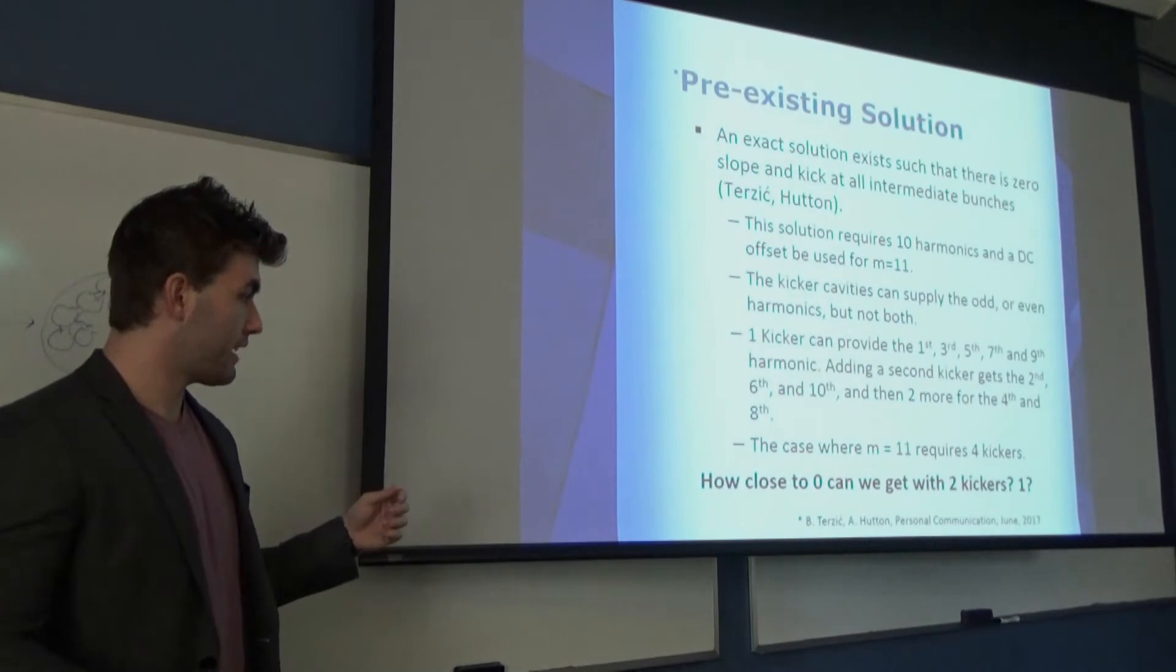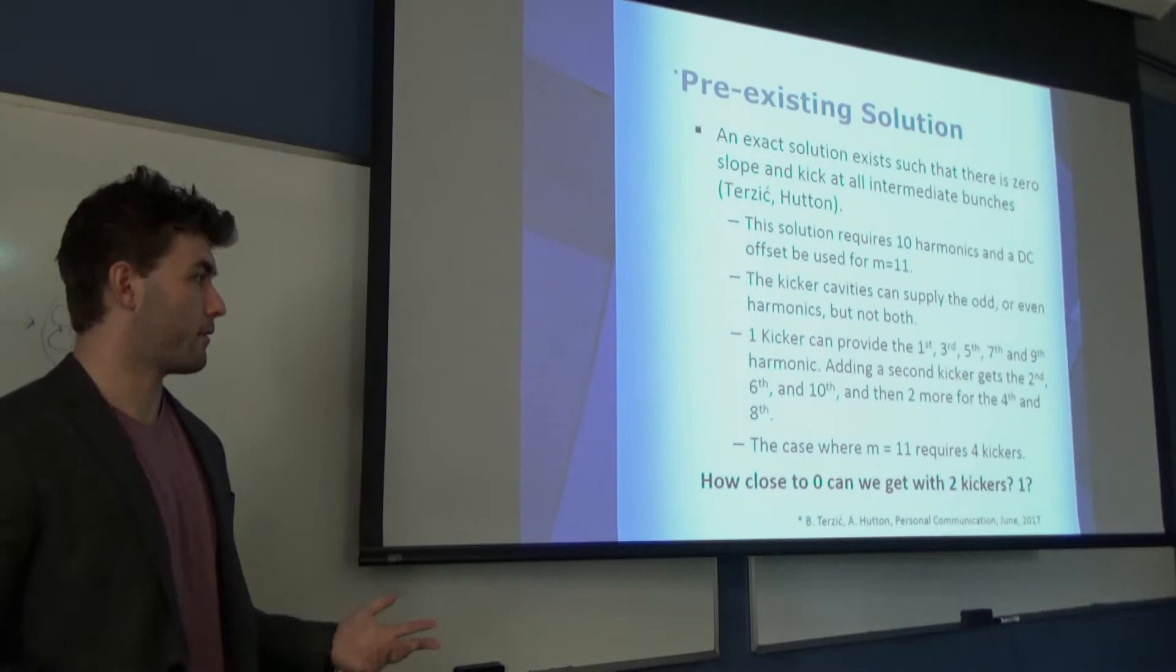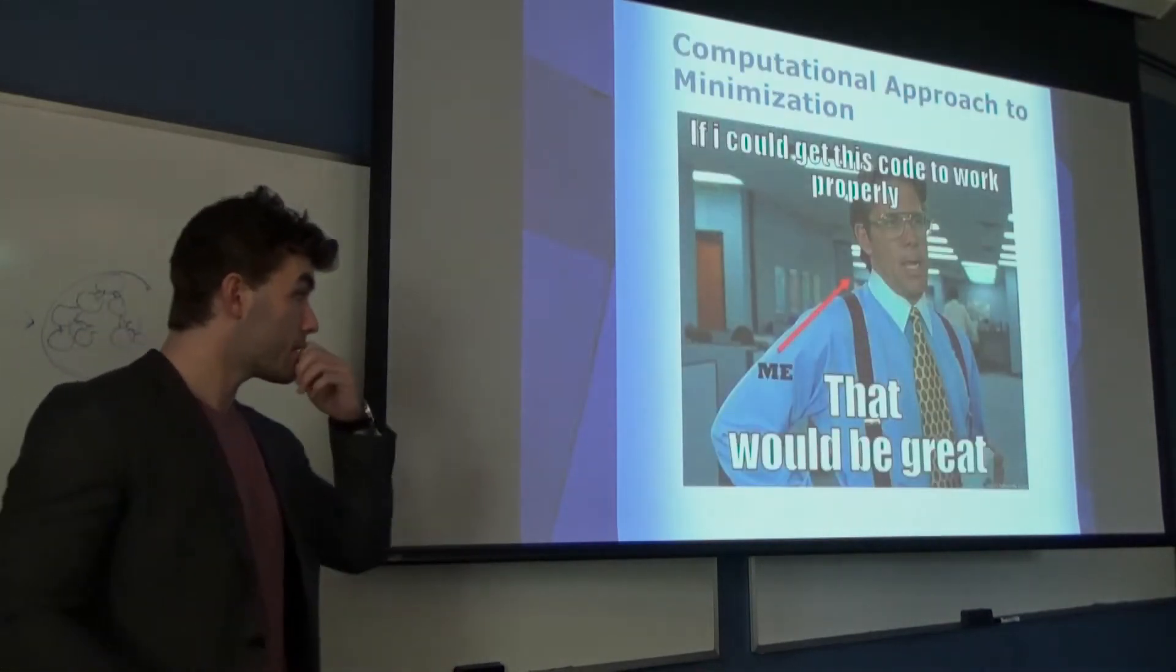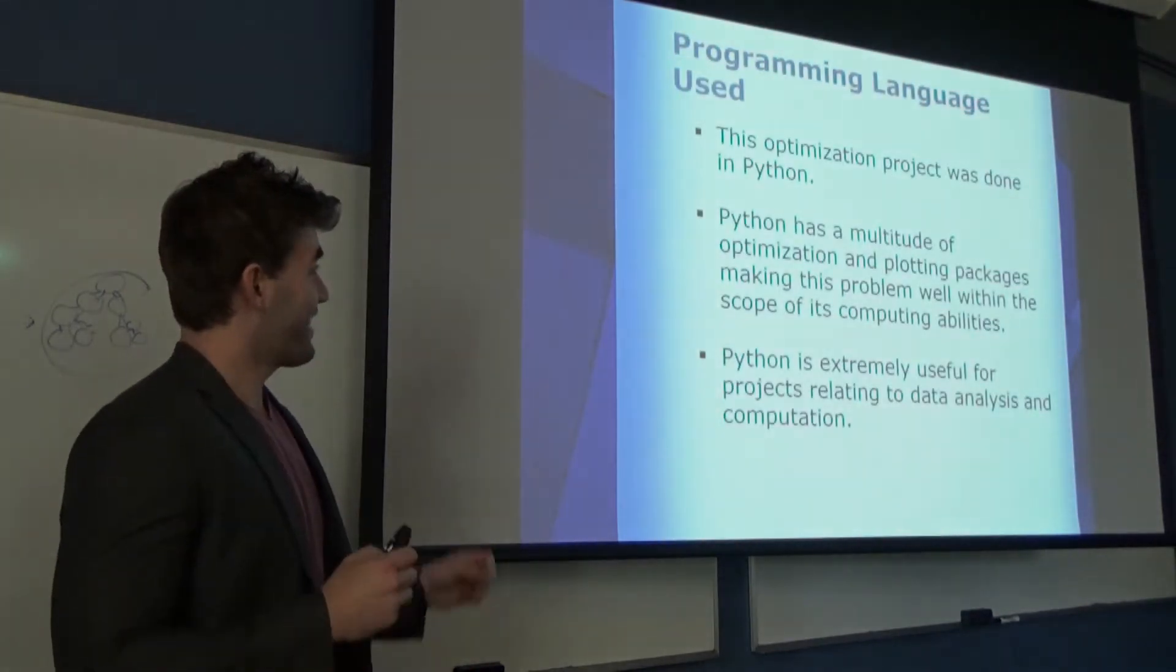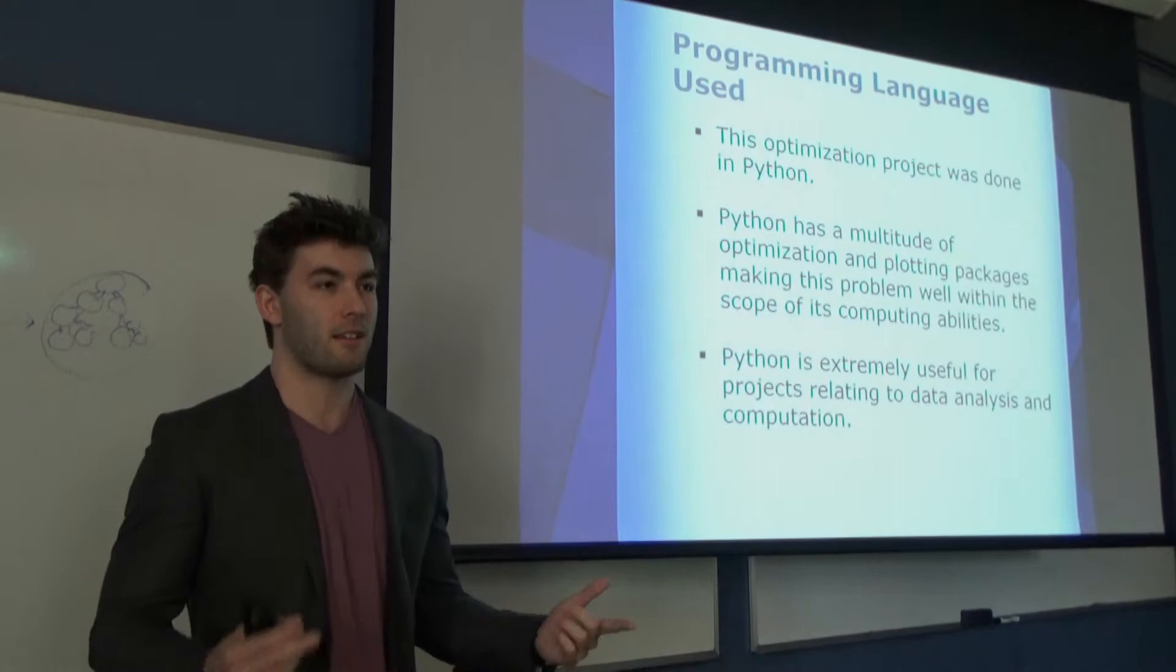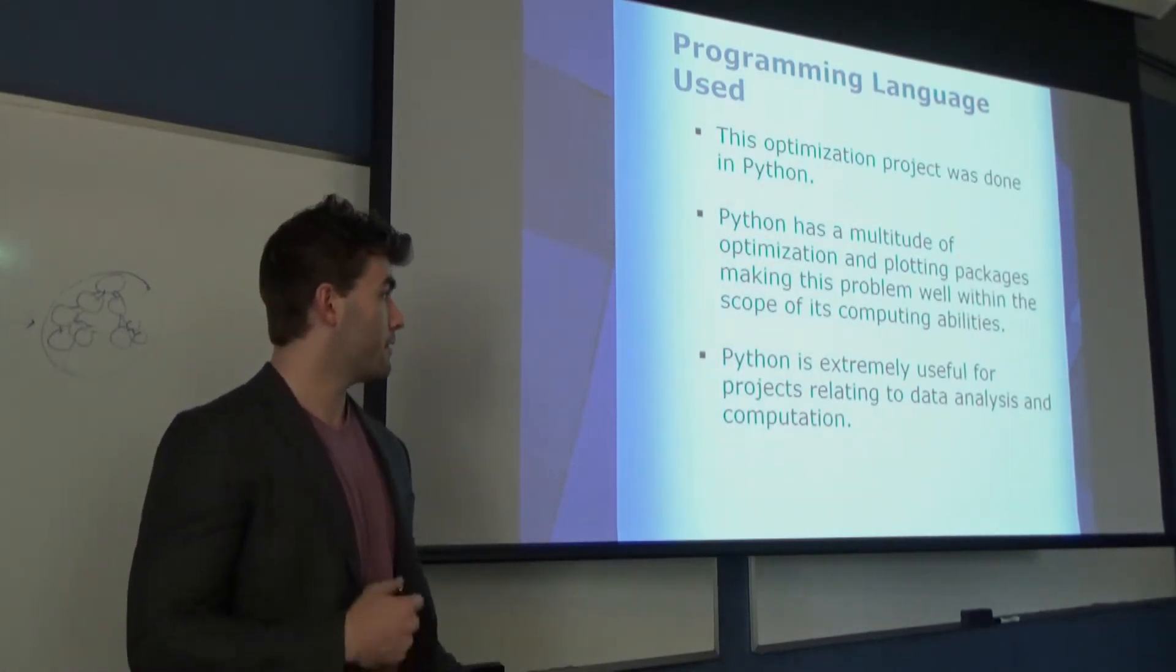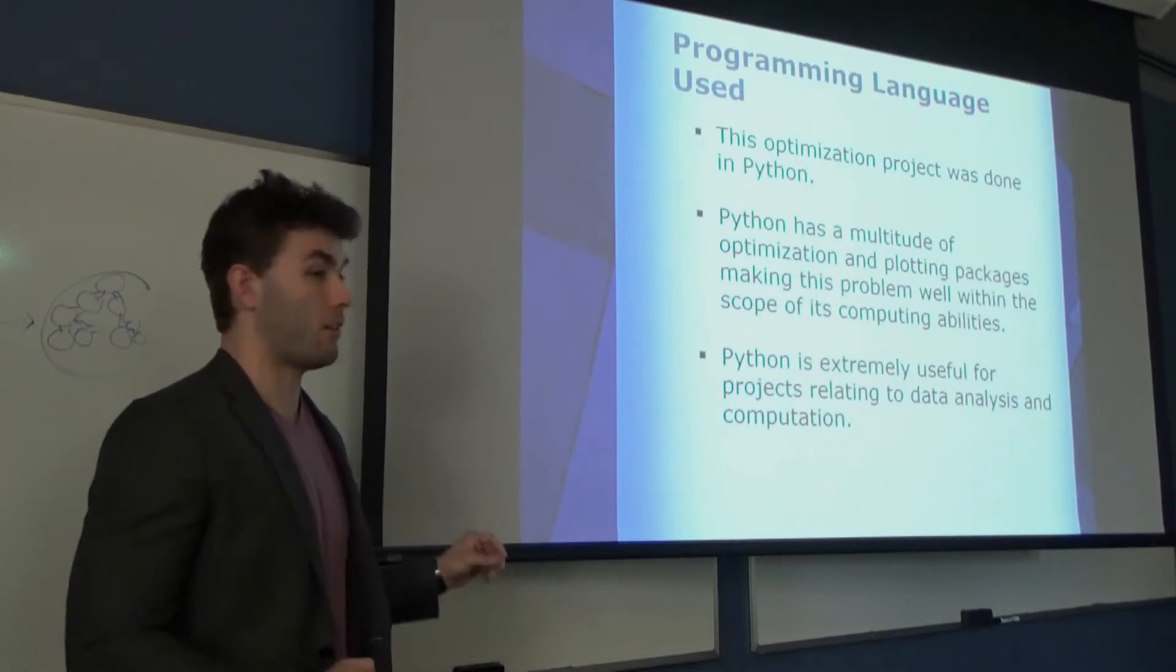Since I'm not trying to get a perfect zero solution, it's not as easy as setting the derivative equal to zero and solving for x. This requires a little bit of numerical optimization, which is what my project had a lot to do with. This whole optimization project was done in Python, and this has been such a great tool when it comes to plotting data, optimization, or any kind of computational physics. I'm really thankful to have been able to learn this in the process.